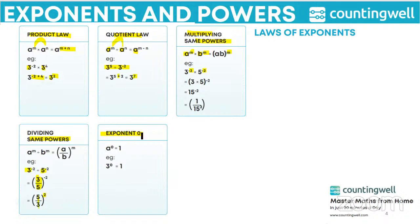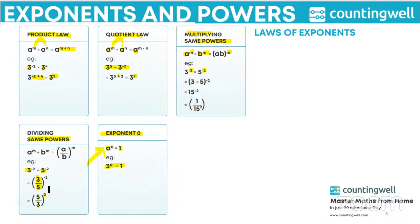The property of exponent 0: any non-zero integer raised to 0 is 1. You cannot take 0 raised to 0 because that would be undefined. So if you take any non-zero integer a, that integer raised to the power of 0 is always 1, regardless of whether it is a small or large number. For example, 3 to the power 0 is 1, and similarly 1000 raised to 0 is also 1.